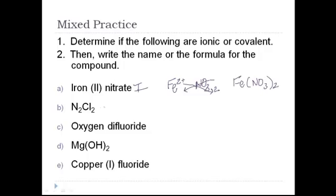N2Cl2: nitrogen and chlorine are both nonmetals, so this must be a covalent compound. The two is represented with the prefix di, so this is dinitrogen dichloride. Oxygen difluoride: there are two hints. The di means it must be covalent, and also oxygen and fluorine are both nonmetals. So this is covalent. We have one atom of oxygen and difluoride is two atoms of fluorine.